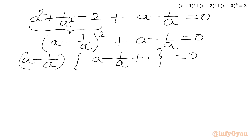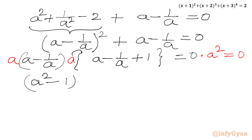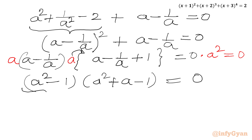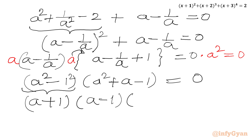Since a cannot be equal to 0, I can multiply our equation by a square both sides. I will multiply one a into the first bracket and second a into the second bracket. So I will get a square minus 1, times a square plus a minus 1, equal to 0. We will apply the a square minus b square formula here. So we can write a plus 1 times a minus 1 times a square plus a minus 1 equal to 0.